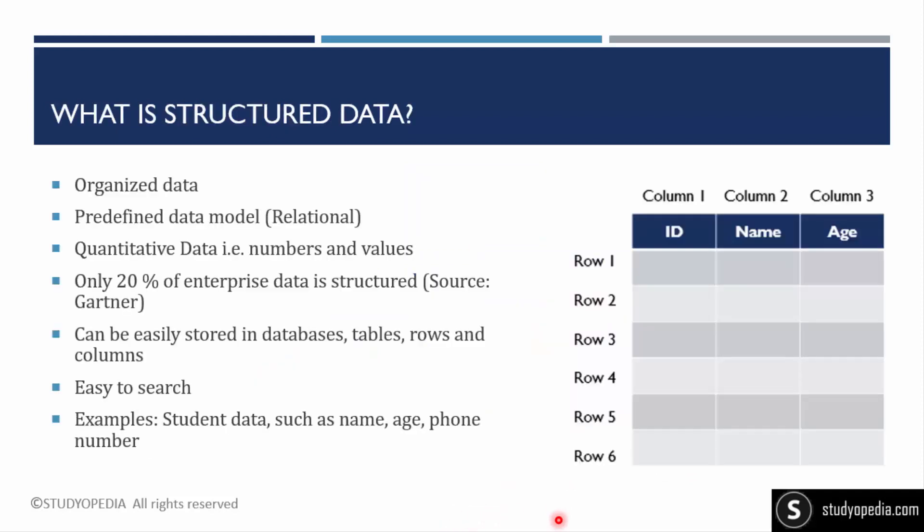Now let's focus on what is structured data. Structured data is organized data. As the name suggests, it is structured. It can be easily stored in the form of rows and columns, that is tables. Let's say you have student records stored in the form of rows and columns. Rows are your horizontal part, columns are vertical part. Here, student ID, name, and age are stored in the form of tables. That is structured data.